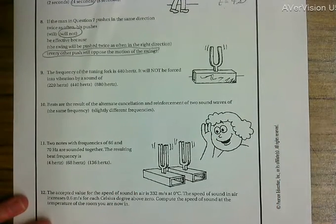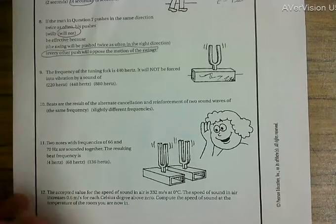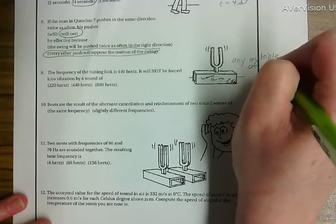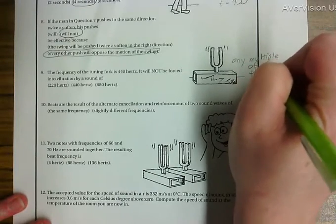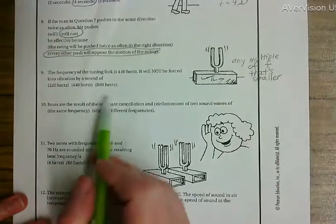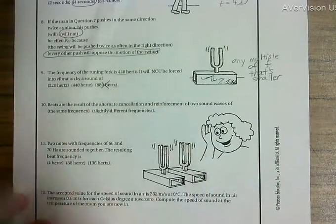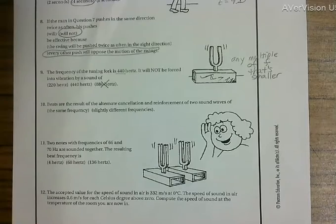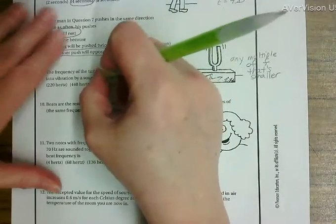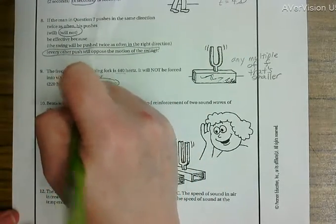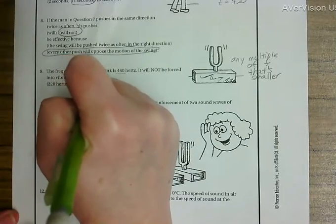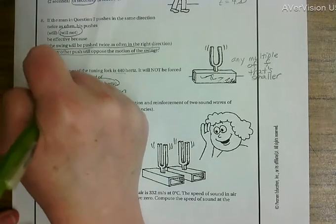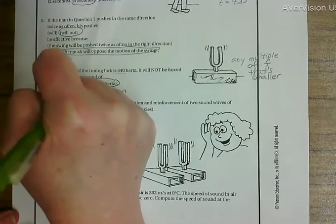The frequency of the tuning fork is 440 hertz. It will not be forced into vibration by a sound of... Any multiple will cause it to vibrate. We automatically know if we're talking about 440 that it can't be 880 because that's larger. That's the one that is not going to force it in. It was asking which one's not going to force it in, and it would be, we would technically circle that one because it's higher. The 440 will cause it to vibrate, and because this is half of 440, it will also cause it to vibrate.